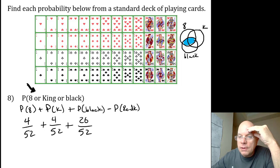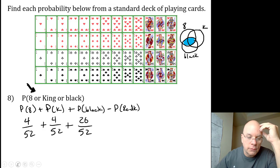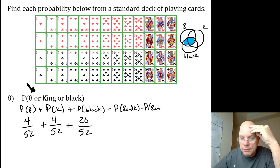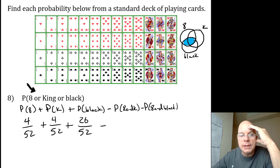If there's a probability of being an eight and a black card, we would subtract, and of course there is, we would subtract the probability of eight and black. So I do need to subtract that probability because two of the eights are also black cards.